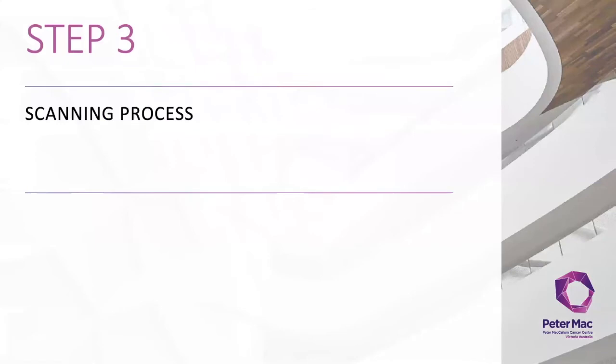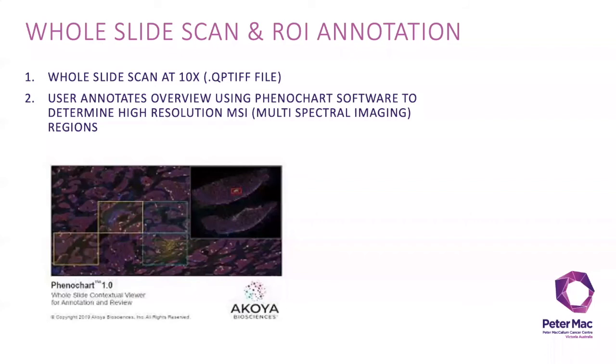After your exposures have been determined and saved, it is time to image your slides using the Vectra. The first step in the scanning process is to perform a whole slide scan of the entire fluorescent slide at times 10 magnification. The resultant file has a QPTIFF extension.